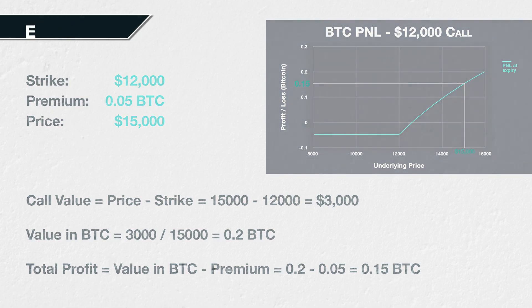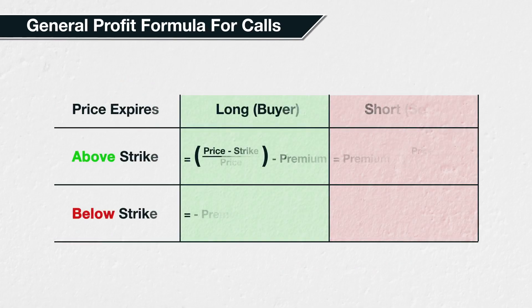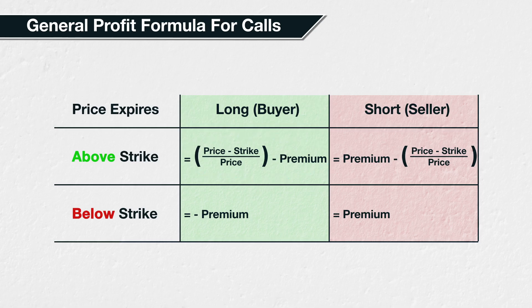Before we work through more examples, it's worth expressing this process as a general formula. If the call option expires out of the money — that is, the underlying price is below the strike price at expiry — then the buyer's loss is equal to the premium paid for the option. If the underlying price is above the strike price, we calculate the profit or loss in Bitcoin using the formula. Any profit for the buyer is a loss for the seller and vice versa, so the formulas for the seller's profit or loss are the negative of the formulas for the buyer's profit or loss.